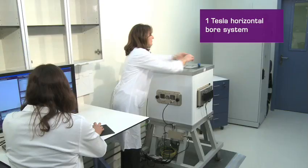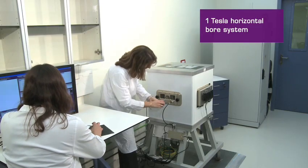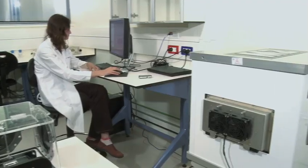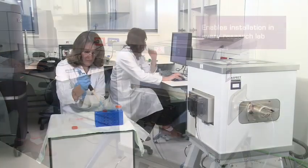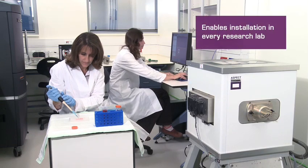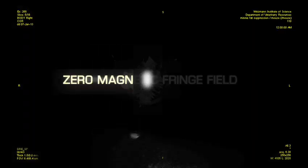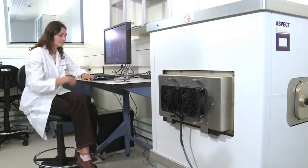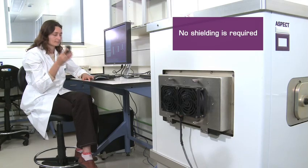The one Tesla horizontal bore system, with its unique compact dimensions and footprint of just two square meters, enables installation of this revolutionary MRI system in every research lab or point of care. Aspect's compact MRI system has zero magnetic fringe field, so no shielding is required.